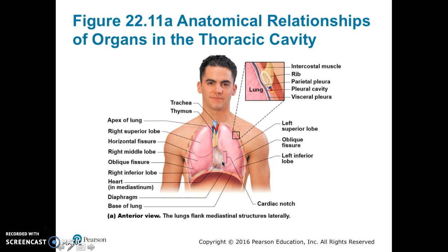In between the two lungs, we see the thymus at the top of the trachea. When we look more closely at the lateral edge in the magnified portion, we see the lung is covered by the visceral pleura. There is a pleural cavity, and then there is the parietal pleura, covering the inside of the intercostal muscle that is attached to the ribs.